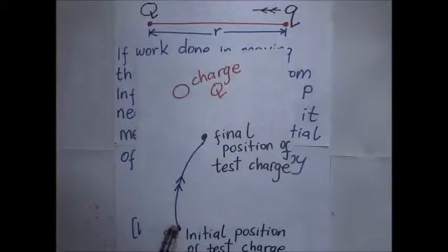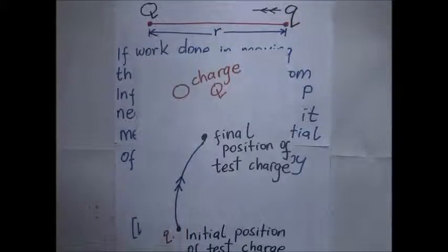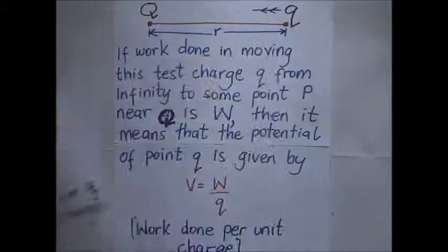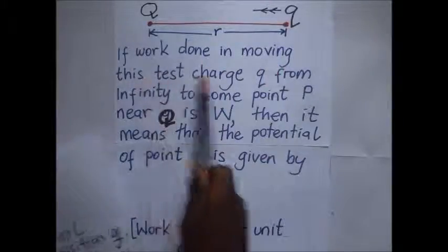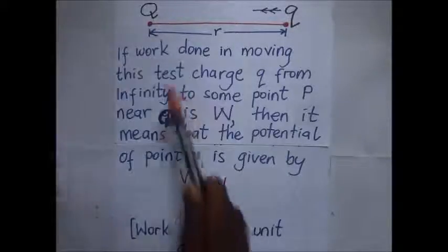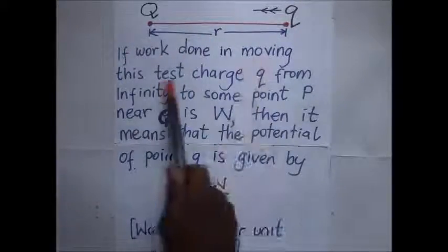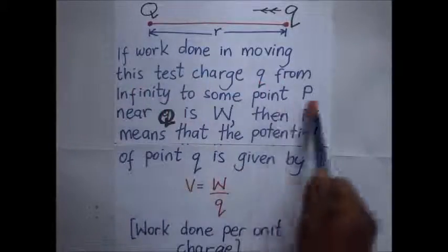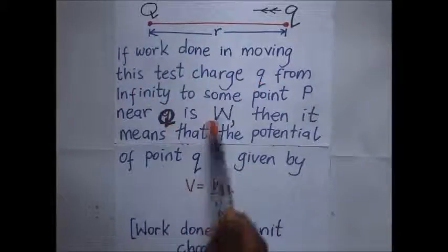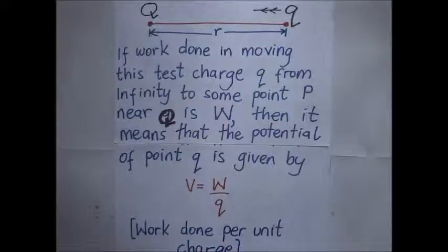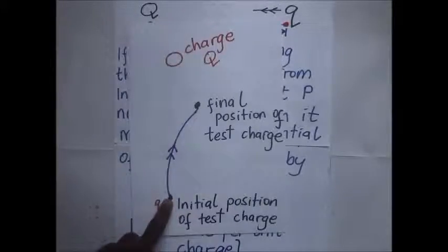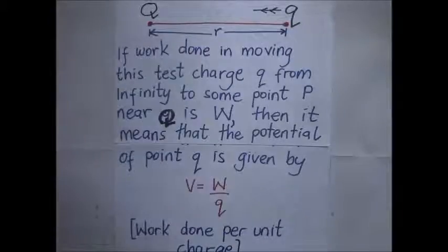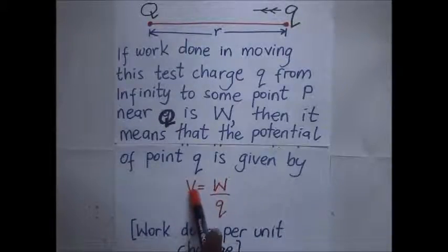Work has to be done to move this test charge from one point to another because of the repulsive forces between the same sign charges. If the work done in moving this test charge q from infinity to some point P near Q is W, then the electric potential at that point is given by work done per unit charge.